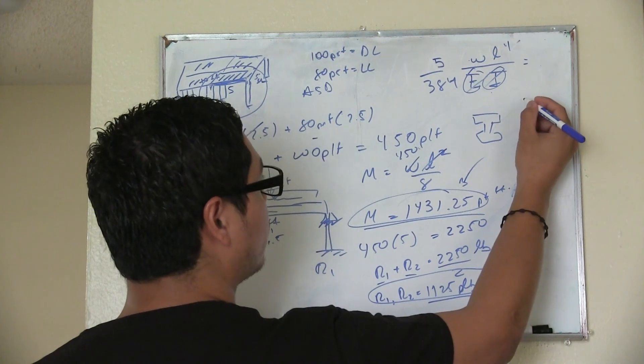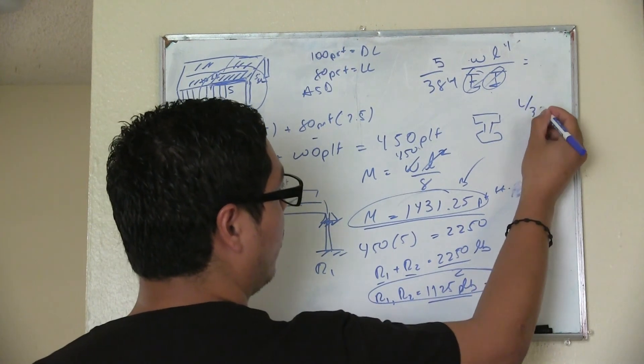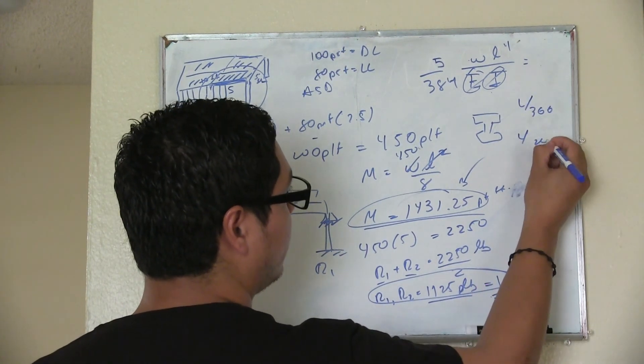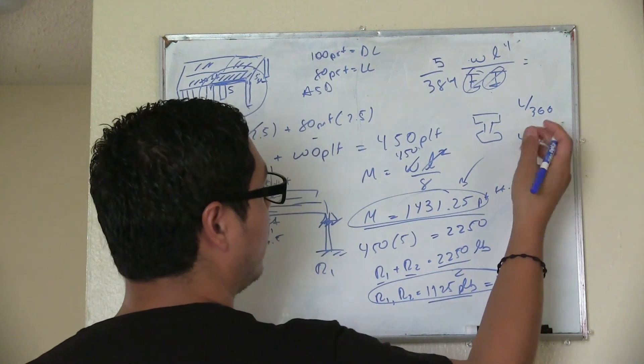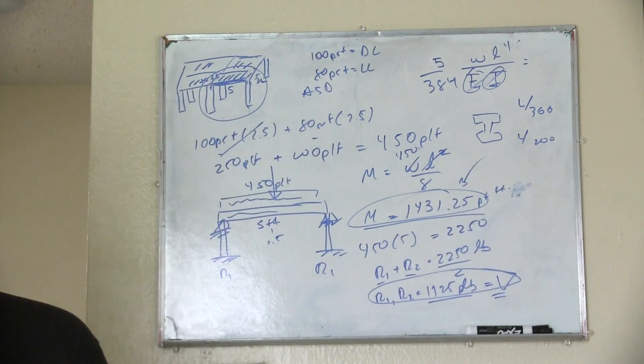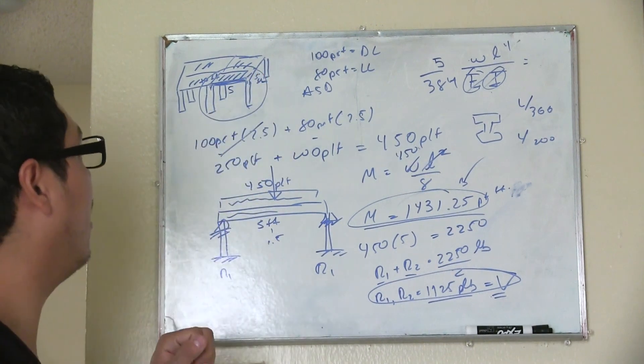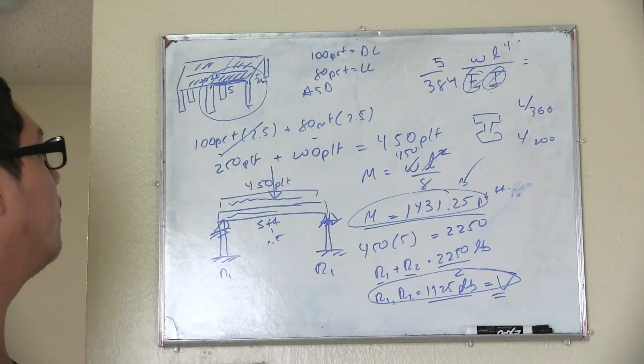And then you plug and chug and you see your deflection. And based on your allowed deflection, it could be L over 360, L over 240, or I don't know, whatever is defined by the designer or by the contractor.